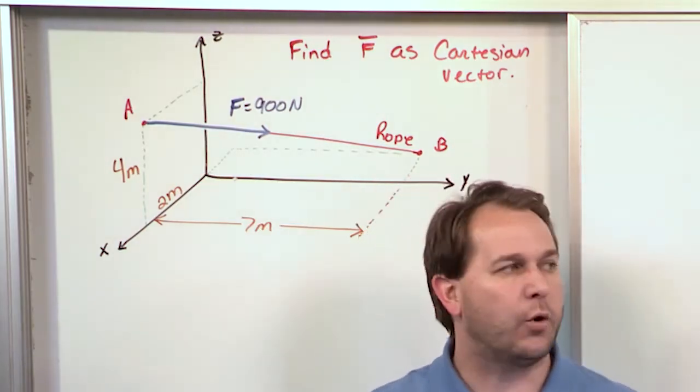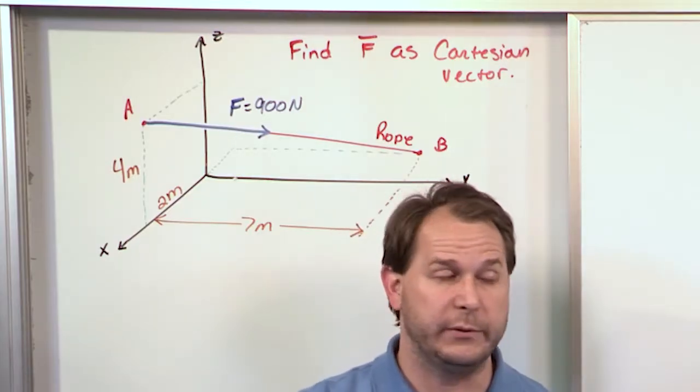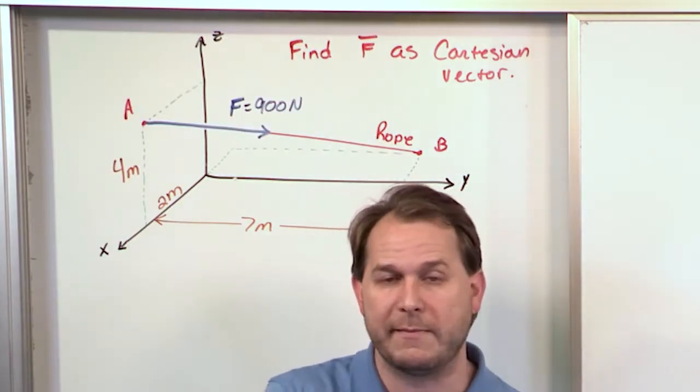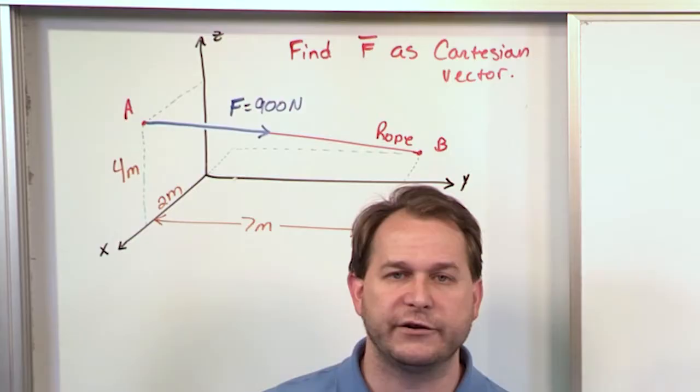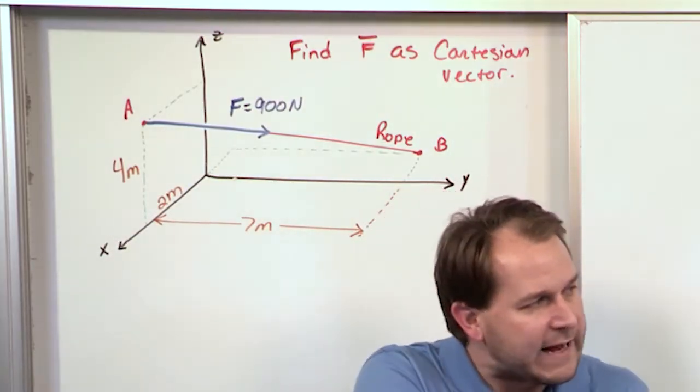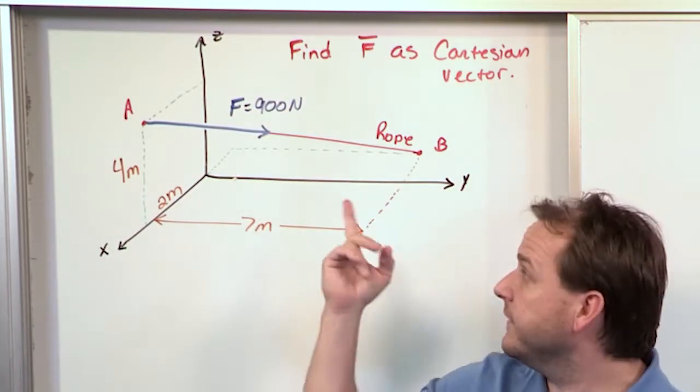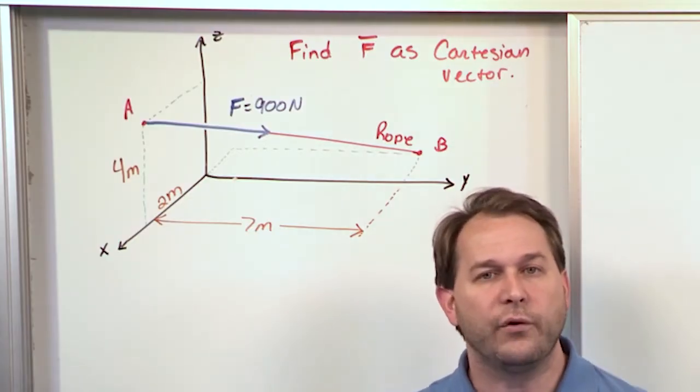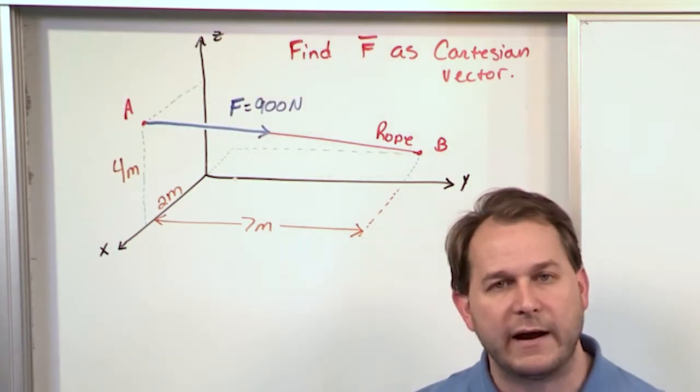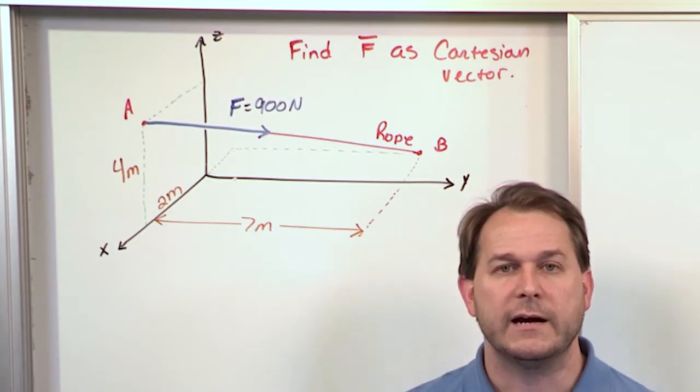What this really means is if I had a wall over there and I tied a rope to it, and then I bring the other end of the rope in my hand, that rope is going to define a direction, A and B, and that's defining the direction. And then I pull on the rope with a force, in this case 900 Newtons.